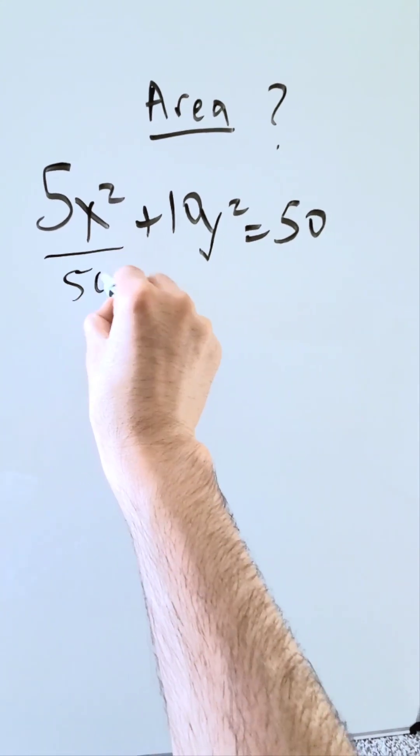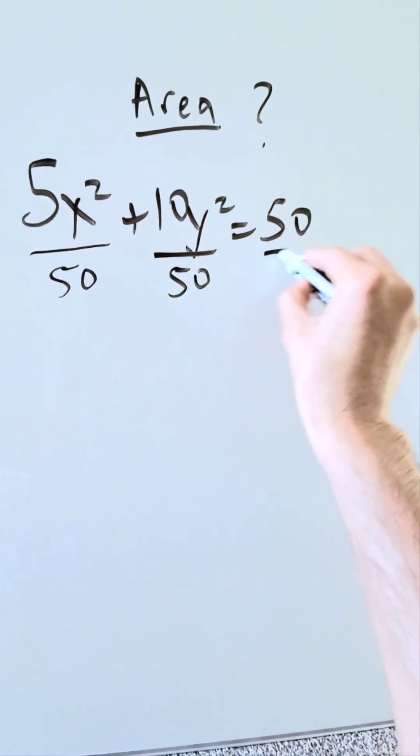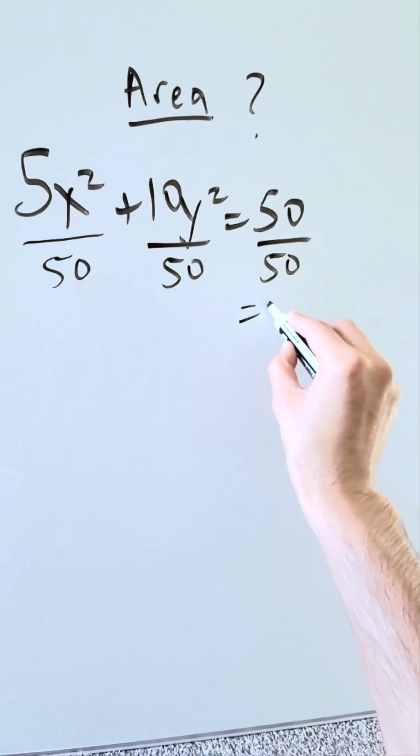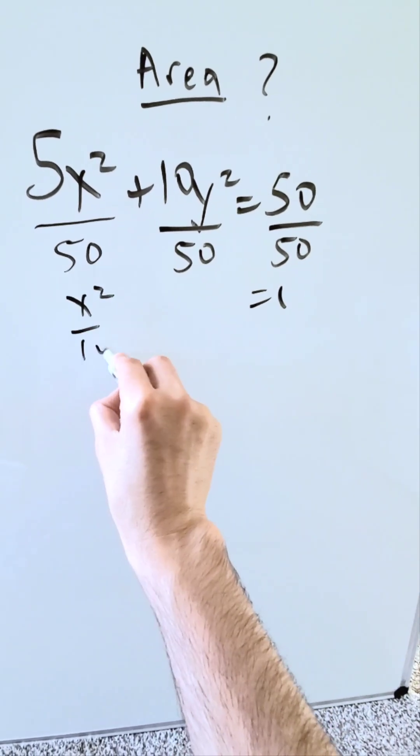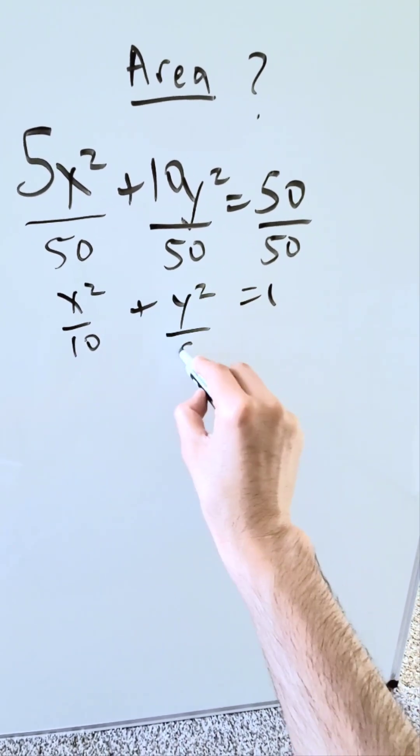Take every individual item here and divide it by 50 because you want to make everything here equal to 1. I will have here x squared over 10 plus y squared over 5.